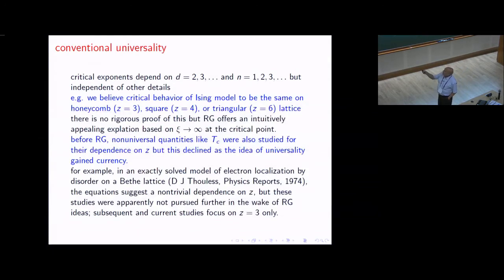For example, we believe the critical behavior of Ising model will be the same on a honeycomb, square, or triangular lattice because these are all embedded in two-dimensional space. There is no rigorous proof of this, but renormalization group offers an intuitively appealing explanation based on the fact that critical phenomena is caused by a diverging correlation length, so only things that survive under coarse graining are relevant.